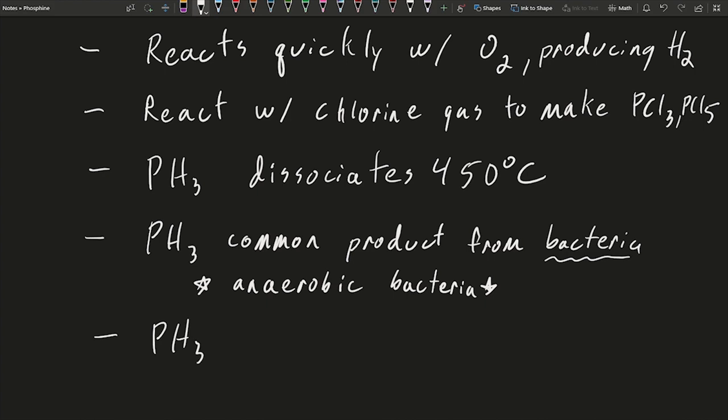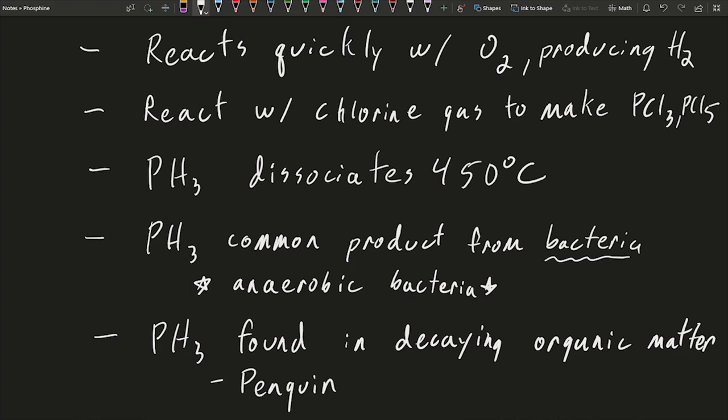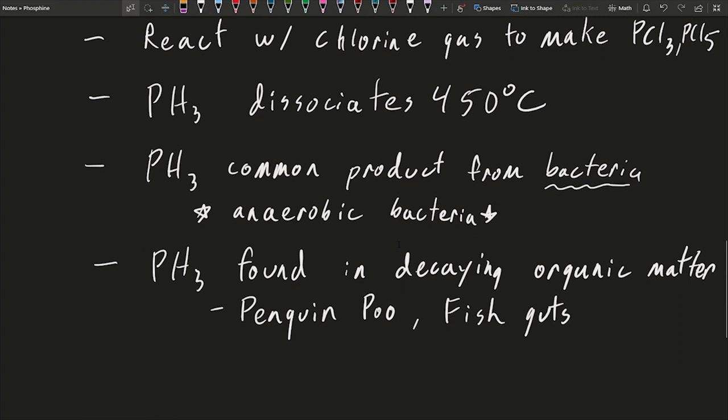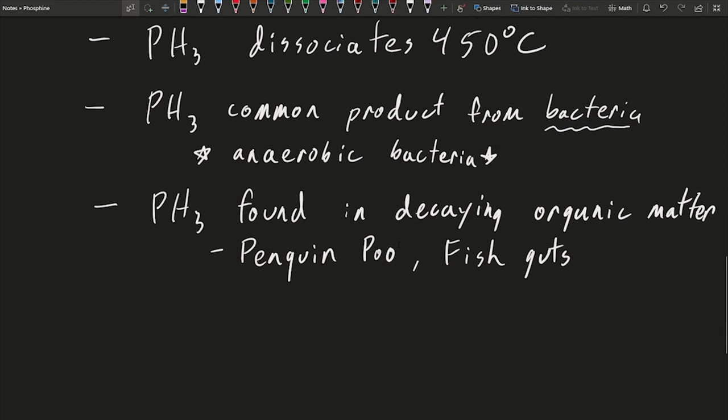You also find PH3 in some aerobic species, but it's not that it's made naturally by those organic species like fish and penguin, but it's found as a product of decaying organic matter. As an example, you can find it in the feces of penguins or some types of fish in their guts. So it's not a compound that animals are naturally making to use themselves because it's quite toxic to aerobic organisms, but it is a natural product of some decaying organic matter.